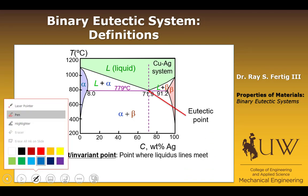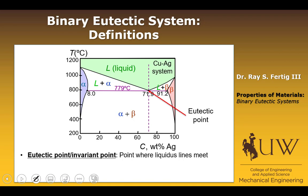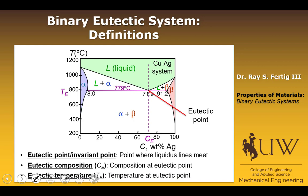One of the features we've already talked about is the eutectic point — that's simply the point where the liquidus lines meet, where the eutectic reaction occurs. It becomes an important point as we discuss what microstructures develop in eutectic systems. We also have the eutectic composition, which is simply the composition at the eutectic point, and similarly the eutectic temperature. These are the main definitions we need as we go forward to talk about microstructure.